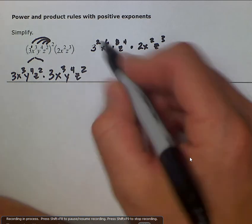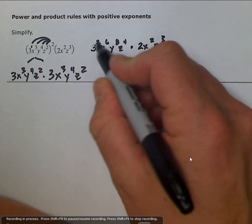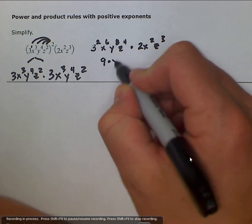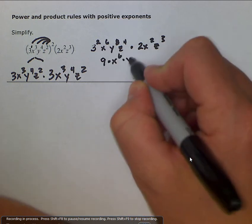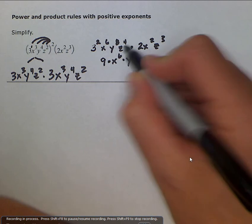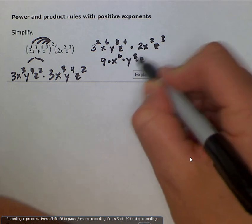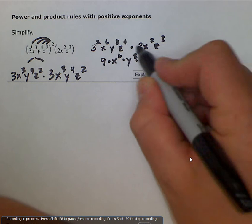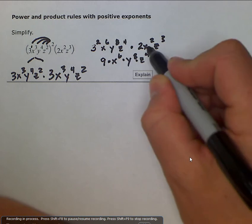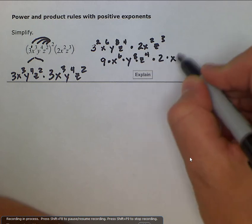Well, three squared is just nine. We're saying nine times x to the sixth times y to the eighth times z to the fourth, times two times x squared times z to the third.